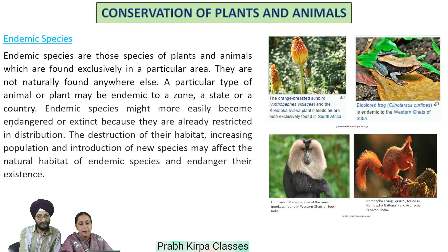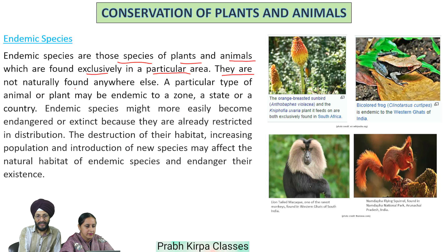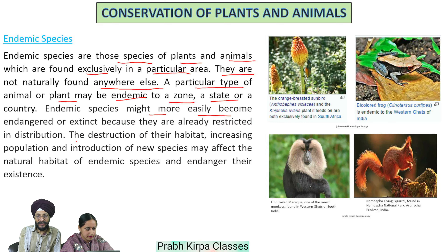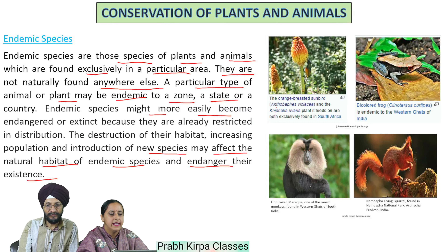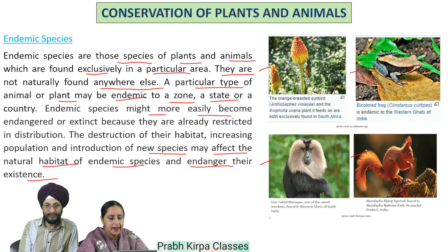Endemic species are those species of plants and animals which are found exclusively in a particular area and are not naturally found anywhere else. A particular type of animal or plant may be endemic to a zone, a state or a country. Endemic species might more easily become endangered or extinct because they are already restricted in distribution. The destruction of their habitat and introduction of new species may affect the natural habitat of endemic species and endanger their existence.